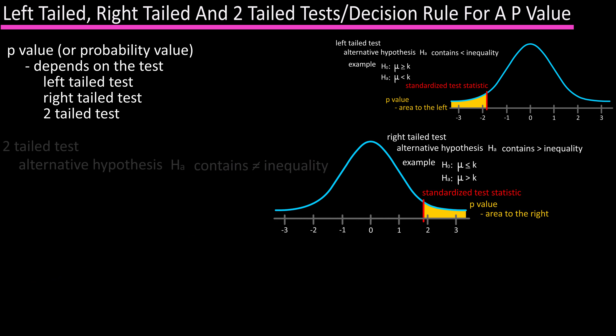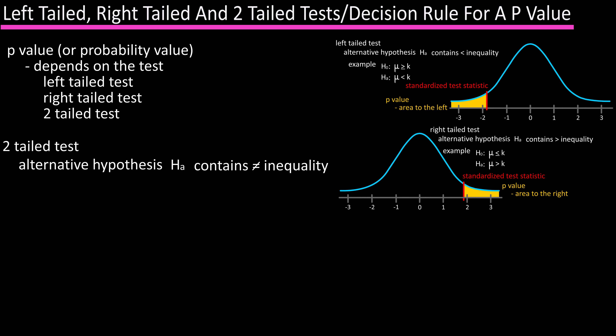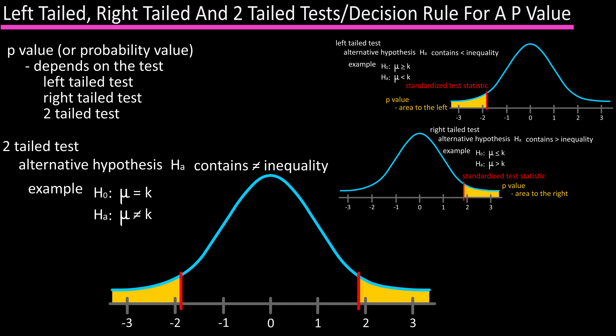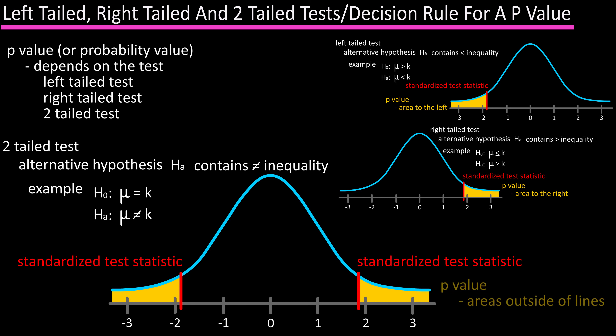For a two-tailed test, the alternative hypothesis contains the does-not-equal sign. For instance, for H sub 0: mu is equal to k, and for H sub A: mu is not equal to k. The red lines represent the standardized test statistics, and the area outside of the lines is the p-value. In this case, each of these areas outside of the lines would be equal to one half of the p-value.